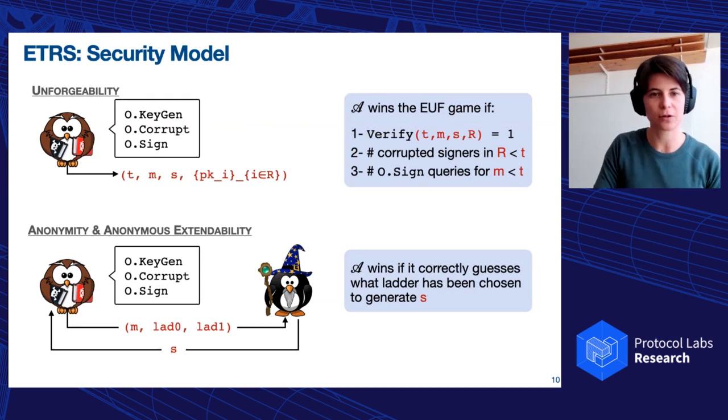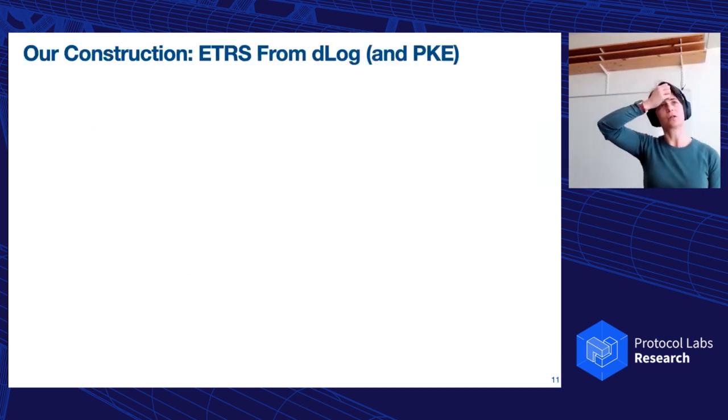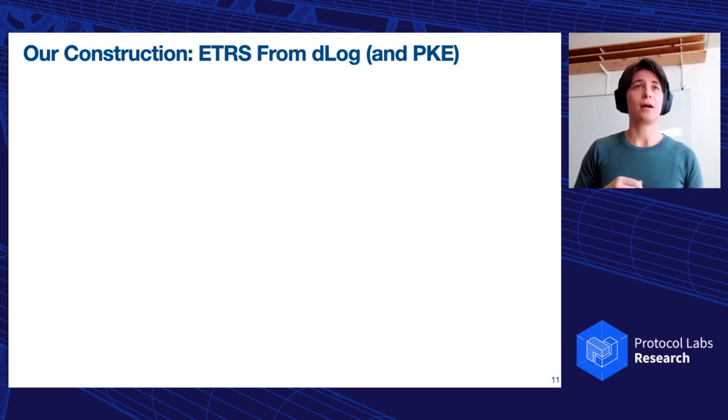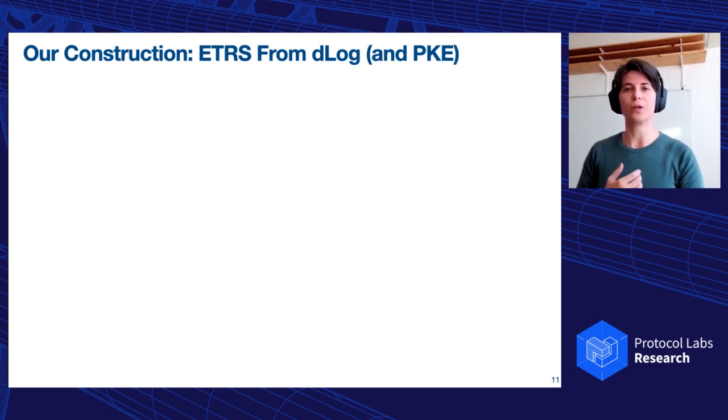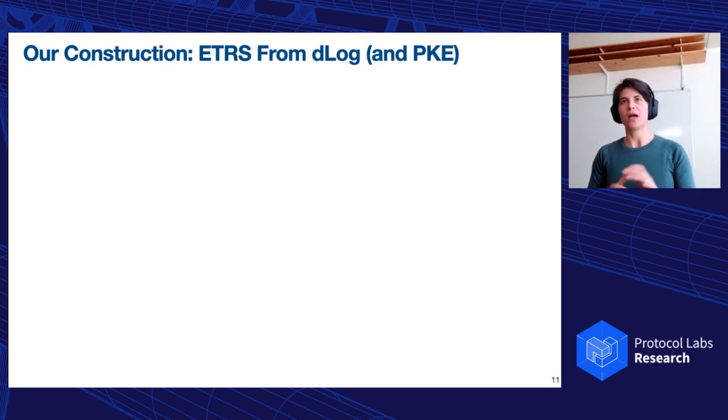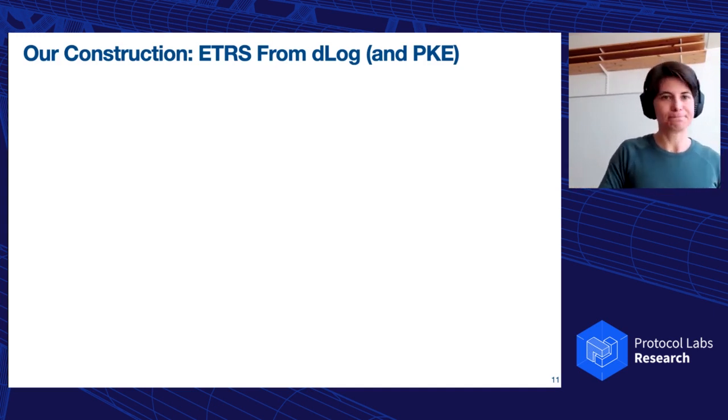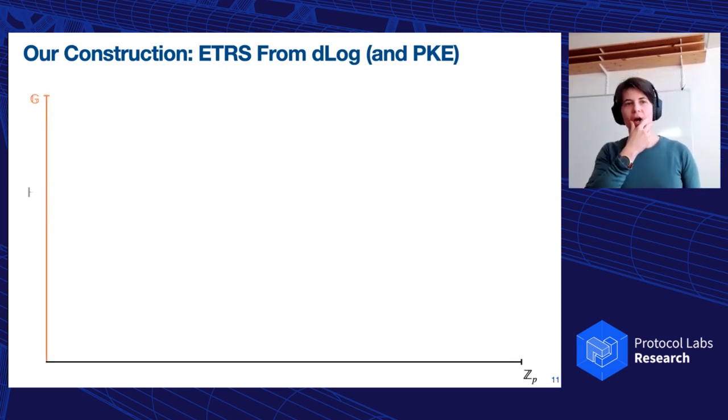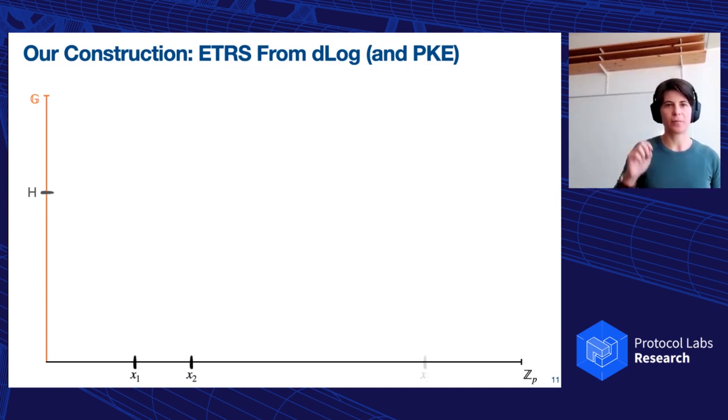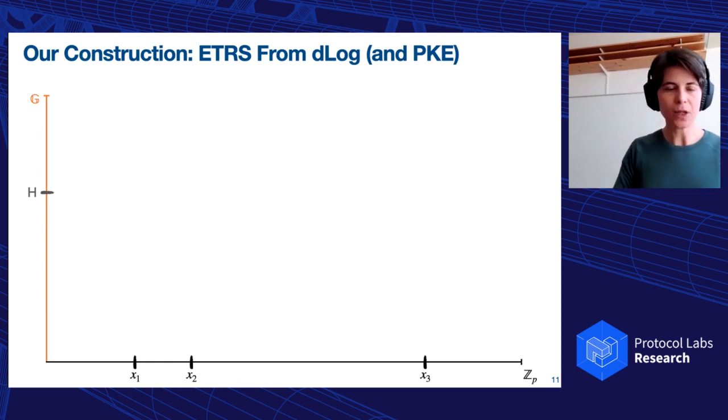Now, I think we are ready to see the construction, which is actually the cool thing. As I said before, we have several constructions, but I will focus here on the one that I find it more interesting because it has some nuance in it. The others are, I think, more straightforward and more like composable with existing notions that I strongly encourage you to check the paper because they are really nice and elegant. But let's look at the more interesting one. So how can we construct this extendable threshold ring signature from the discrete log assumption? And we will also need some public key encryption.